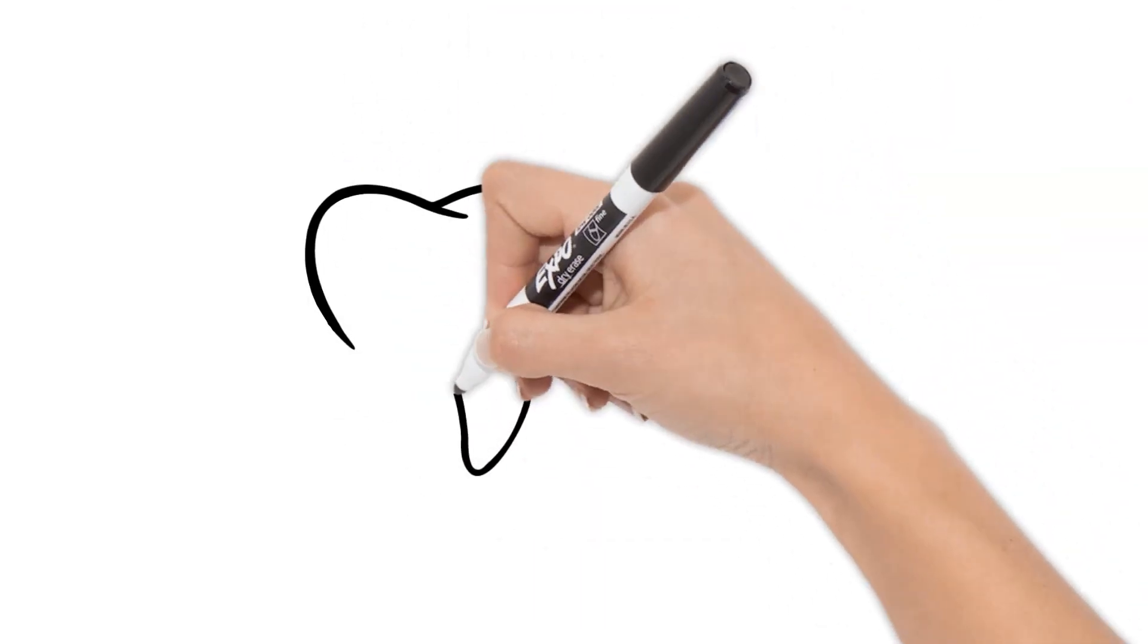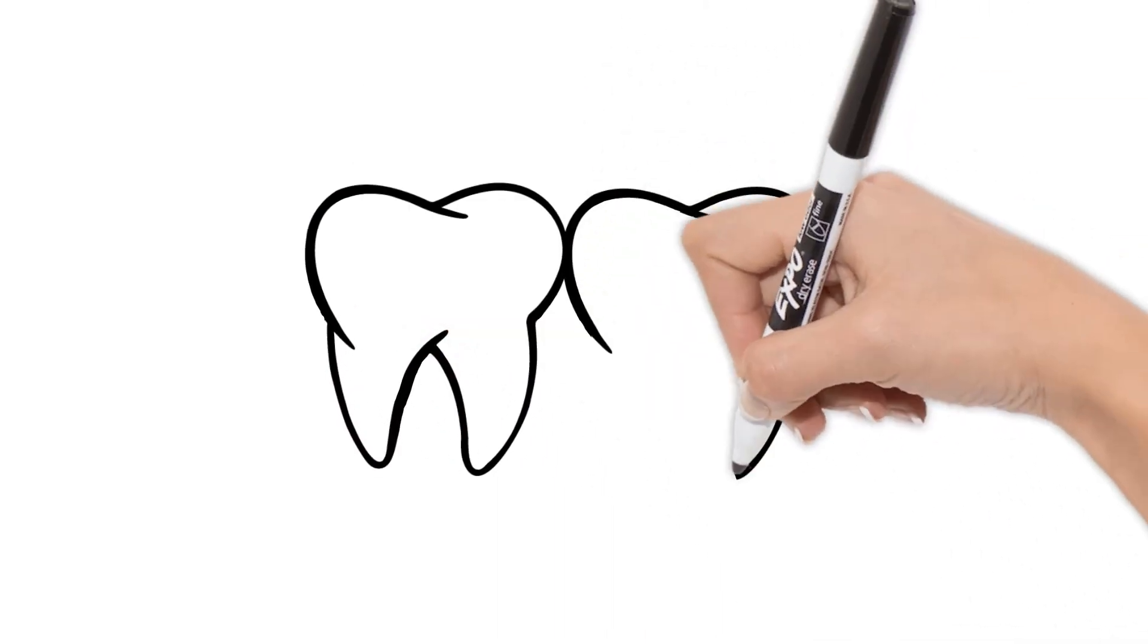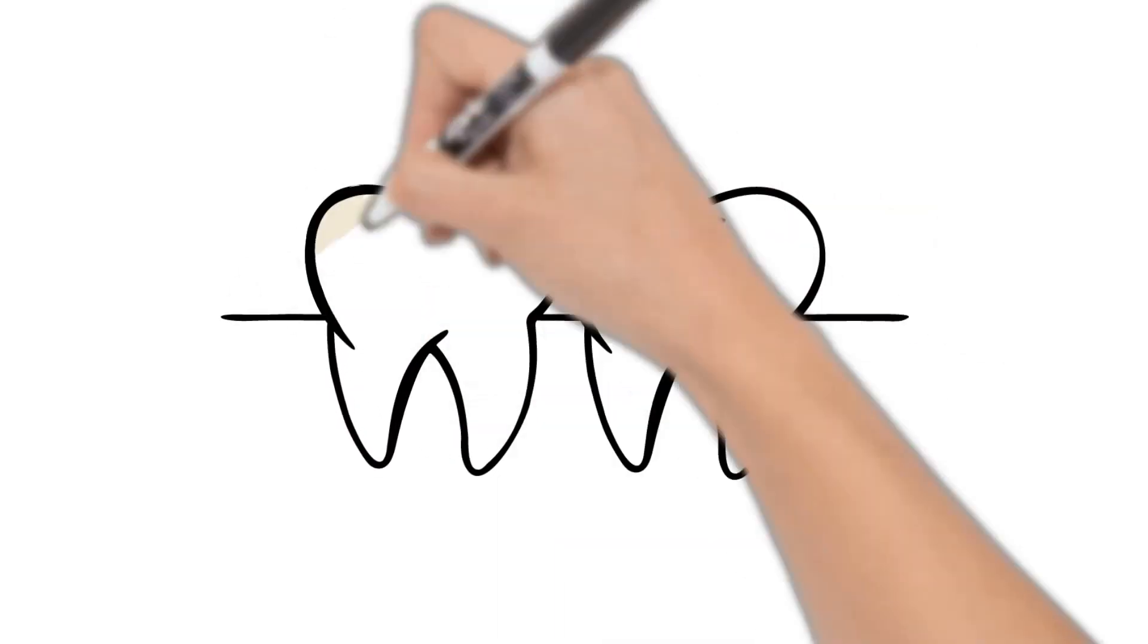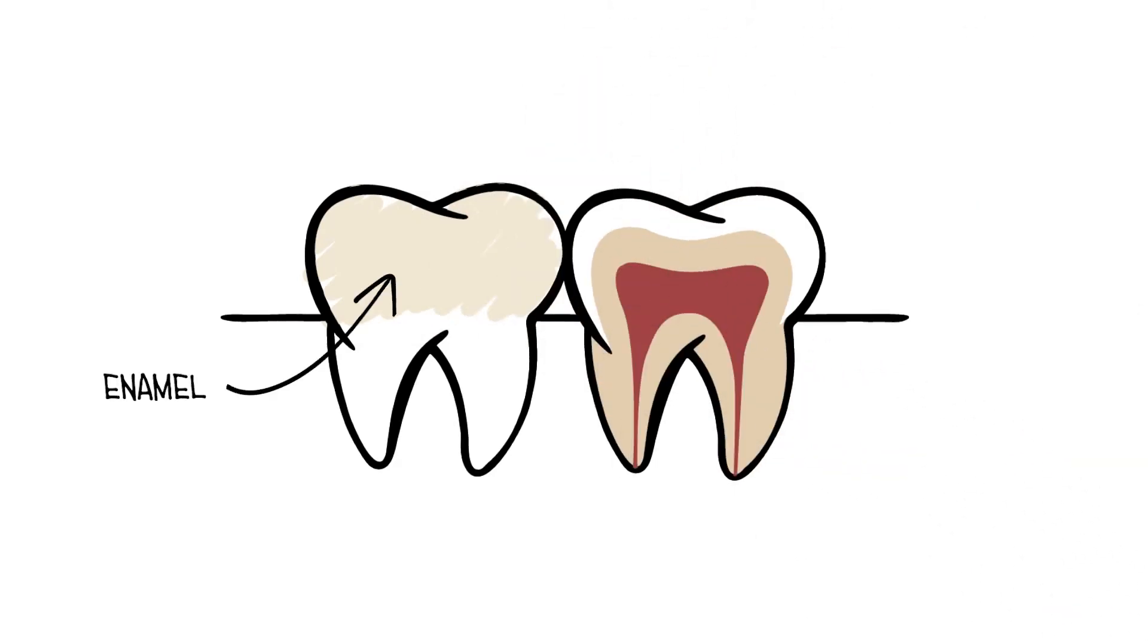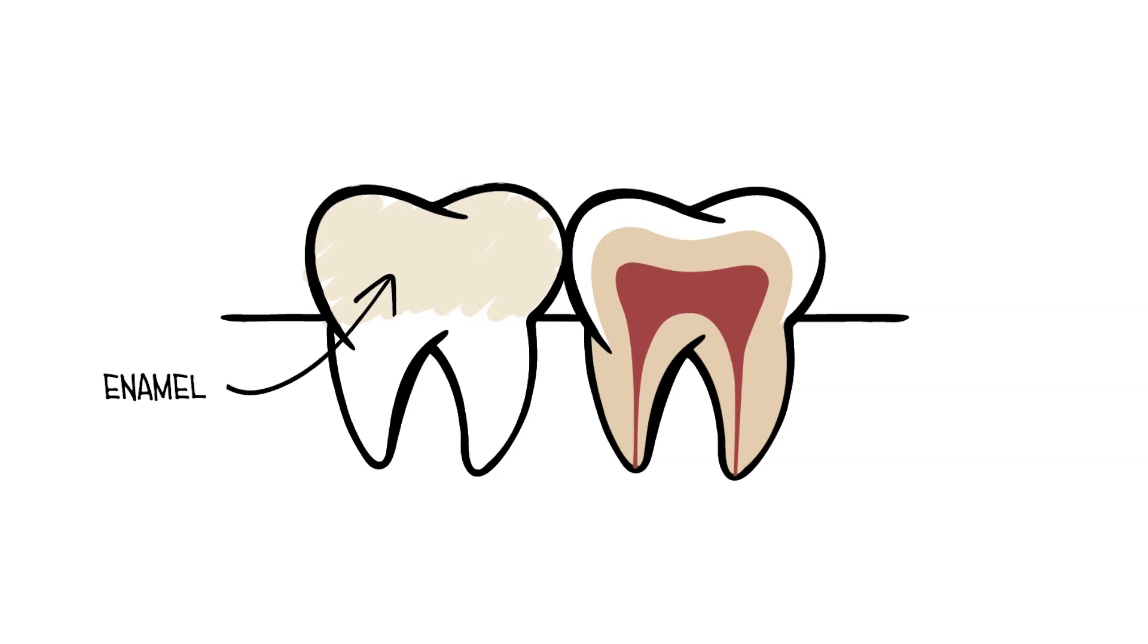To answer these questions, let's first learn a little tooth anatomy. The outer layer of the top of the tooth is enamel, and beneath the enamel is dentin. Enamel is thinner and typically much lighter in color, while dentin is darker and makes up the bulk of the tooth.